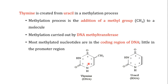Most methylated nucleotides are present in the coding region of the DNA, including thymine. There are other methylated nucleotides in DNA as well, but thymine is one of the most important. The coding region is the most important region of DNA because it is responsible for transcription, producing important proteins and RNA. These methylated nucleotides are present in very little amount in the promoter region.